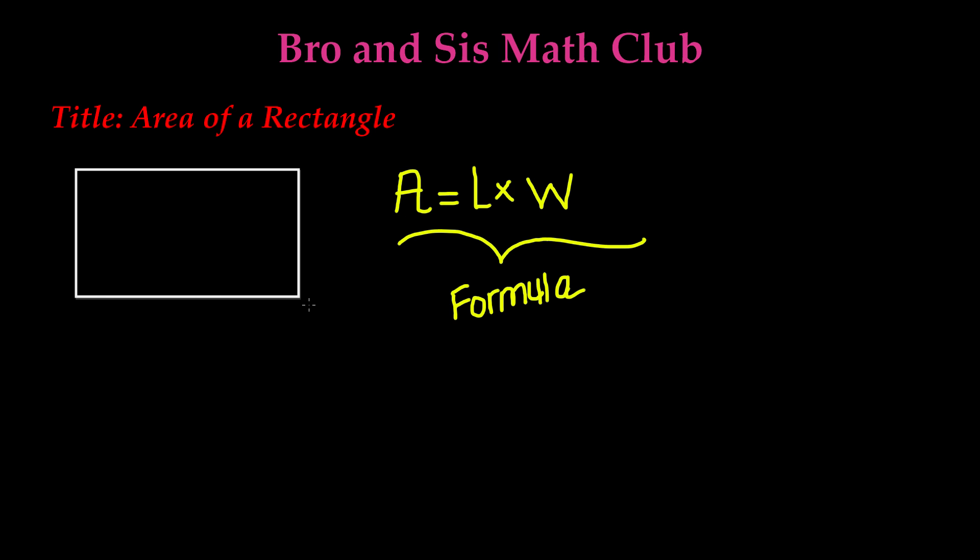So we have two lengths in a rectangle. Here is the length and here is another length. And the width, of course - there are two widths, so here's one width and the second width is right here. Let's go ahead and put on the measurements.